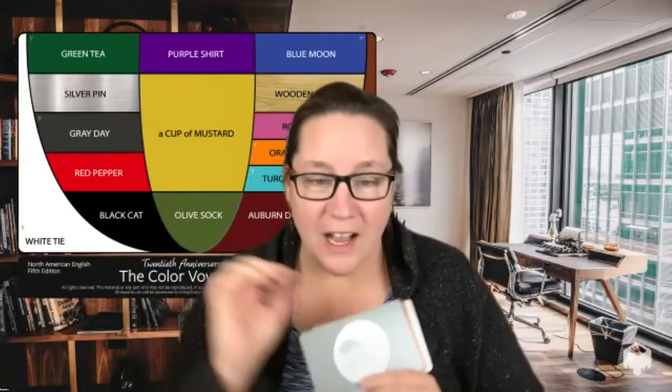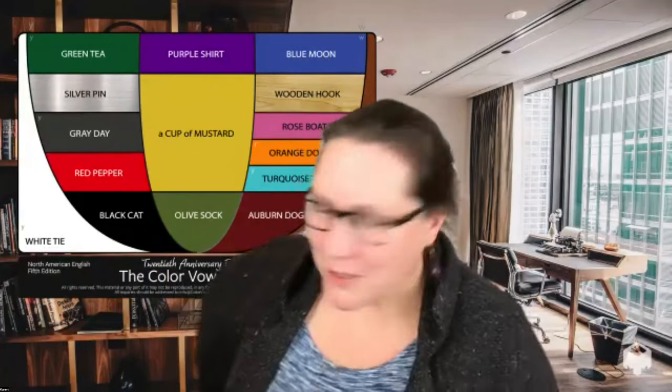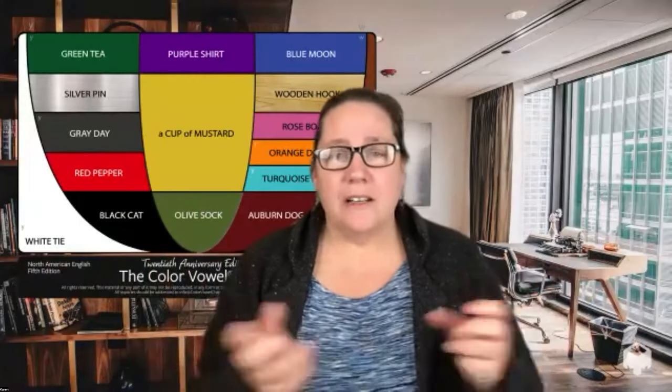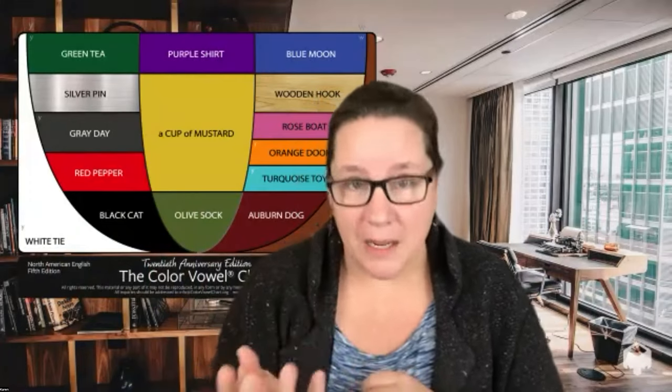Here are a few more Color Vowel anchor phrases: silver pin, gray day, red pepper, black cat. And this is what happened in the video with the word 'novice' — the student was directed with 'olive sock' and was able to apply that sound, that color, to the word he saw to say 'novice' instead of 'no vice.'